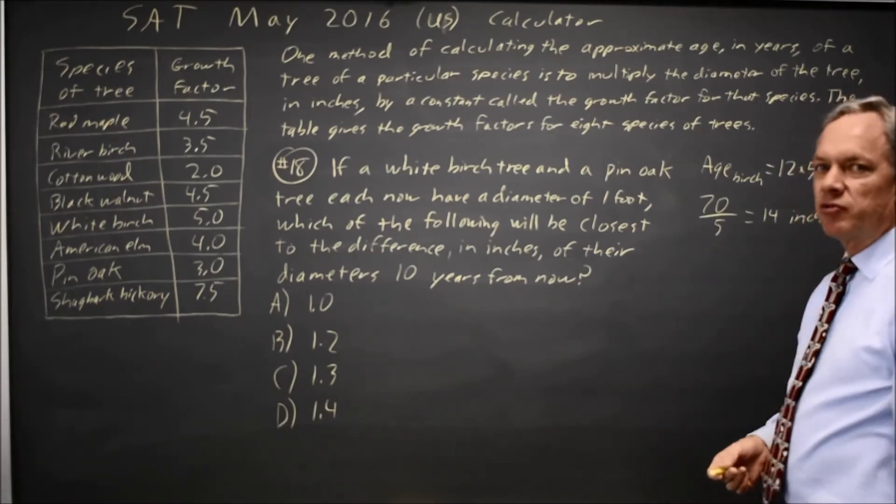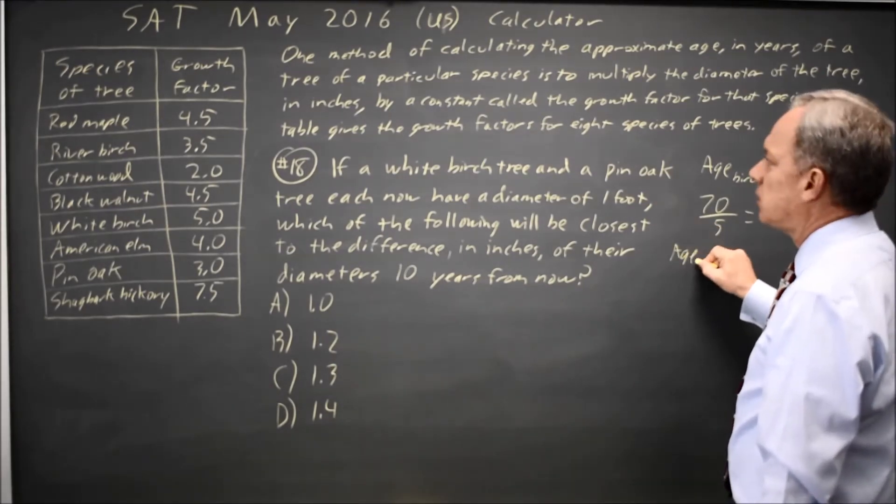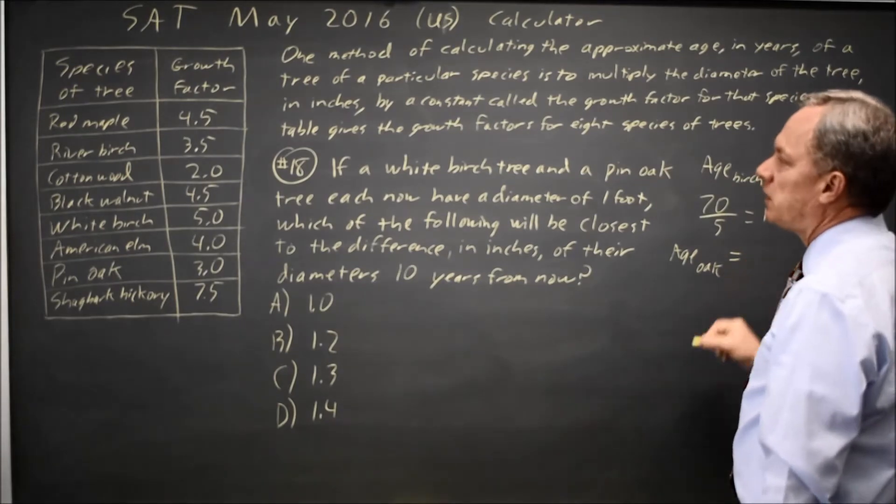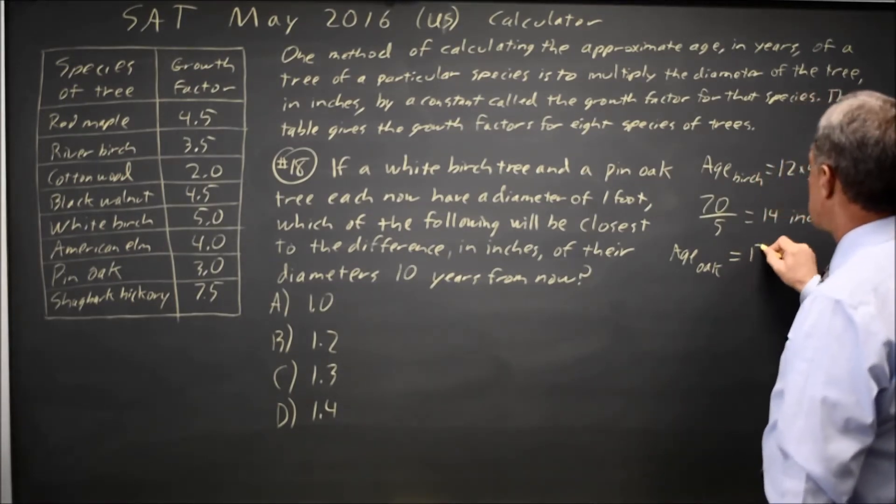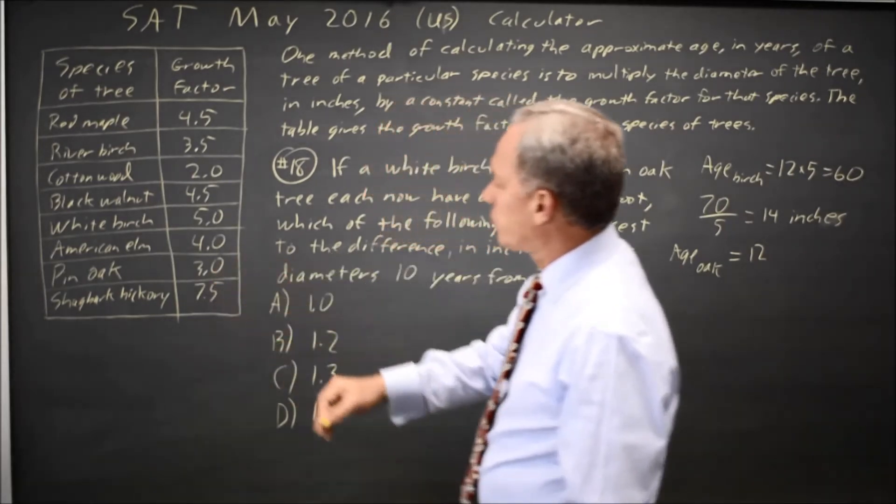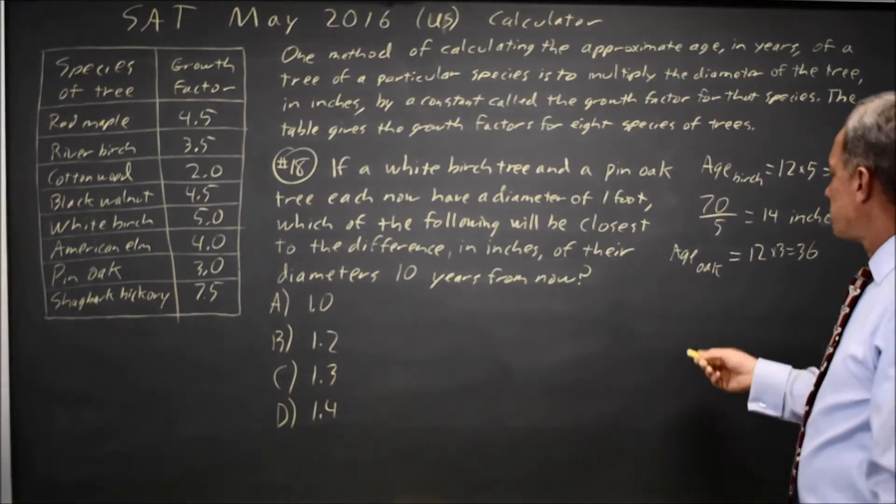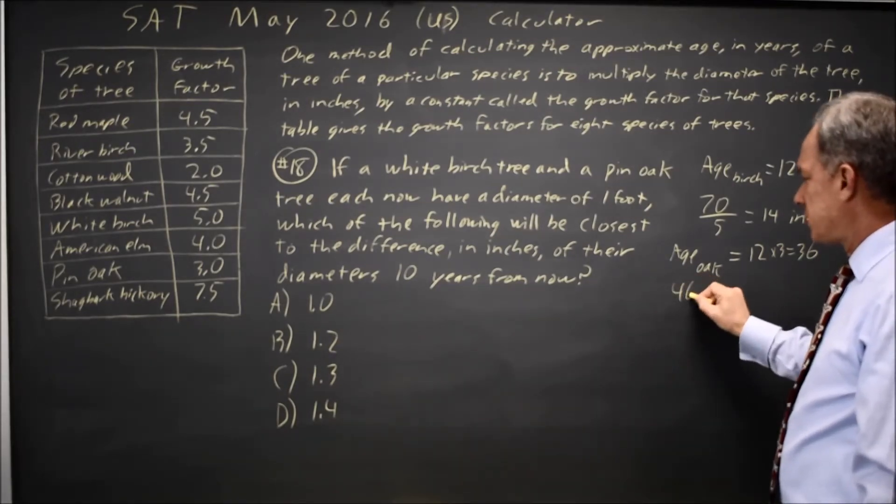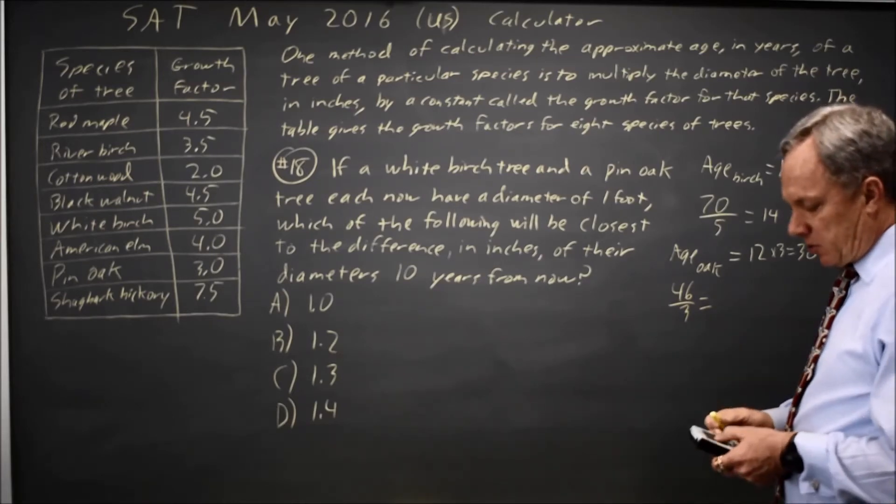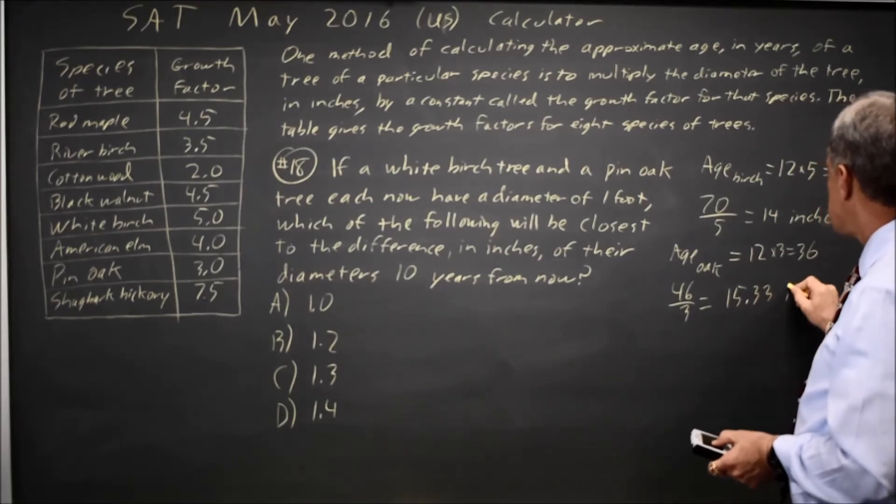So the white birch will be 14 inch diameter 10 years from now. And the age of the pin oak is 12, the diameter, times the pin oak growth factor of 3, equals 36. So 10 years from now the age will be 46. Divide that by the growth factor of 3 and you get 15.33 repeating inches.